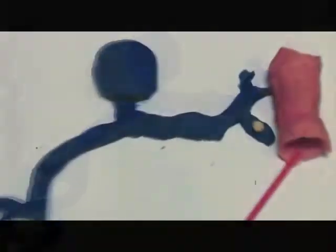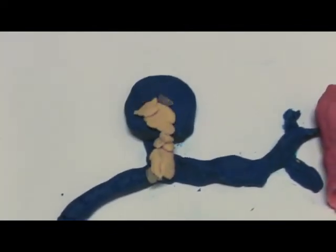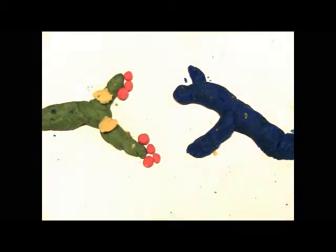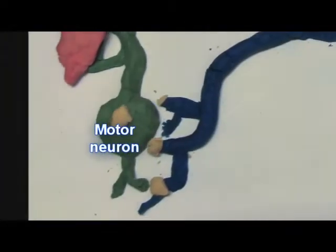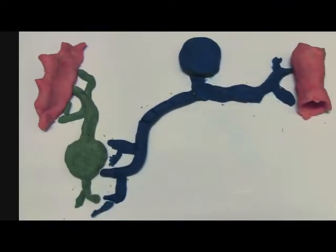It's controlled by a very simple neural circuit. Touching the siphon generates an electrical signal called an action potential in the sensory neuron. The action potential travels along the sensory neuron toward the motor neuron. At the connection between these two neurons — the synapse — chemicals called neurotransmitters are released from one cell and activate receptors on the next cell. If the signal is strong enough, an action potential will also be generated in the motor neuron, sending the message to the gill to retract.